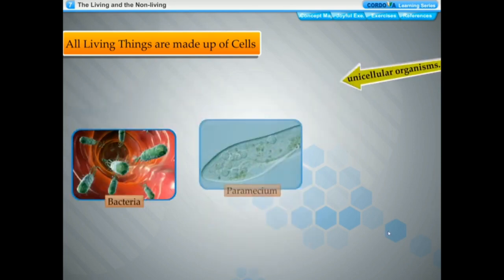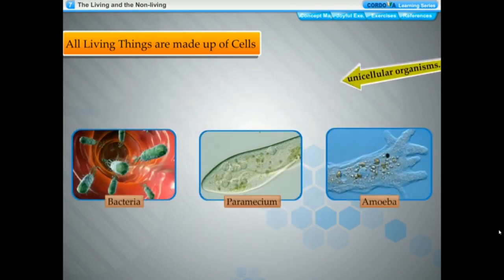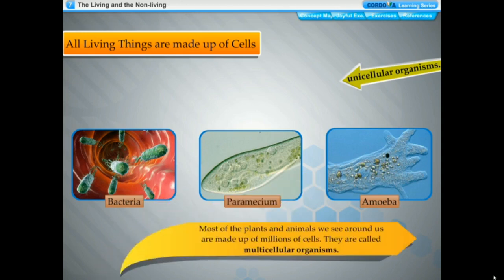Some plants and animals consist of a single cell; they are called unicellular organisms. Amoeba, paramecium, and bacteria are common examples of unicellular organisms. They are extremely small and not visible to the naked eye — they can only be seen with the help of a microscope, and thus are called microscopic organisms. Most plants and animals we see around us are made up of millions of cells; they are called multicellular organisms.